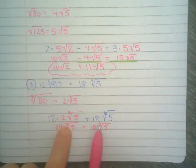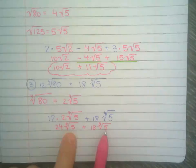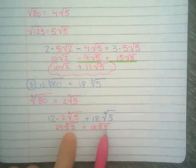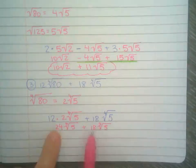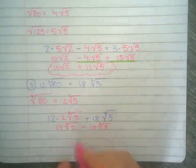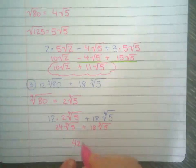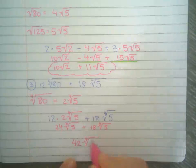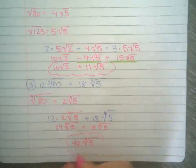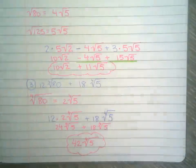Now they have the same index. They have the same radicand. So now I can add them together. So 24 plus 18 is 42, 4th root of 5. That's it, thank you.